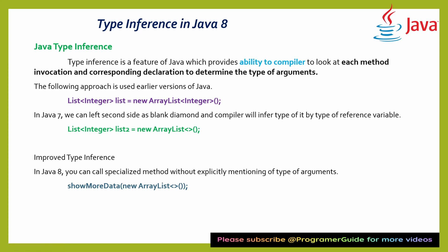For example, 'new ArrayList<>' with just the diamond brackets — that is the generic type. This is the way how you use type inference. Let's see the example programs.